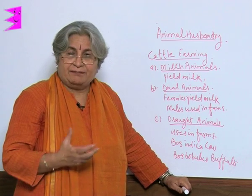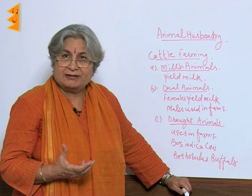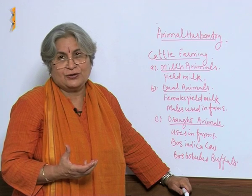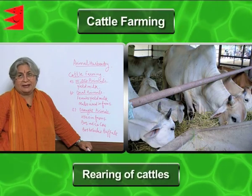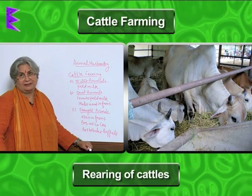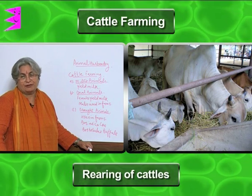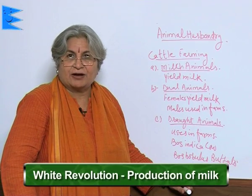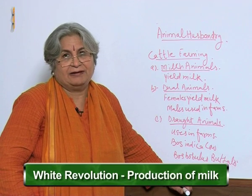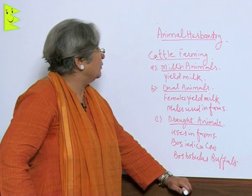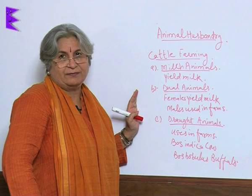The most important animals are cattle, which give us milk, and in some religions even their meat. They are also used as labour in the farms. Cattle farming — the rearing of cattle — is a very important part of both the white revolution and green revolution. White revolution is the production of milk, and we have been able to increase milk production significantly in recent years. To achieve this, we must first understand what kinds of cattle there are and how they can be classified.